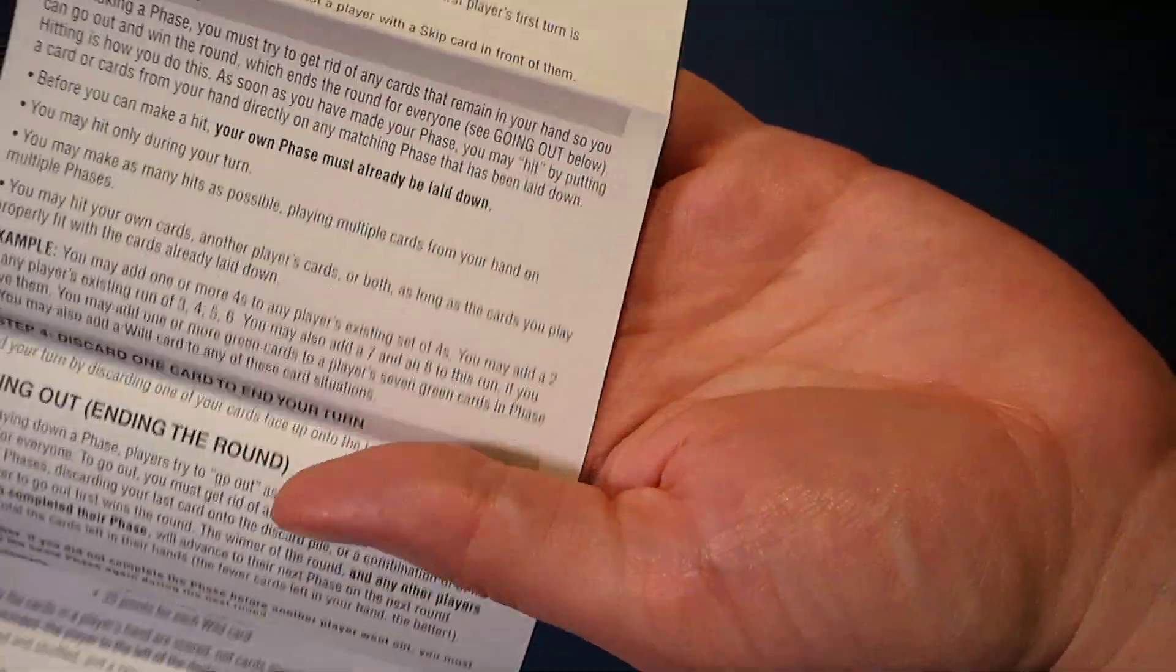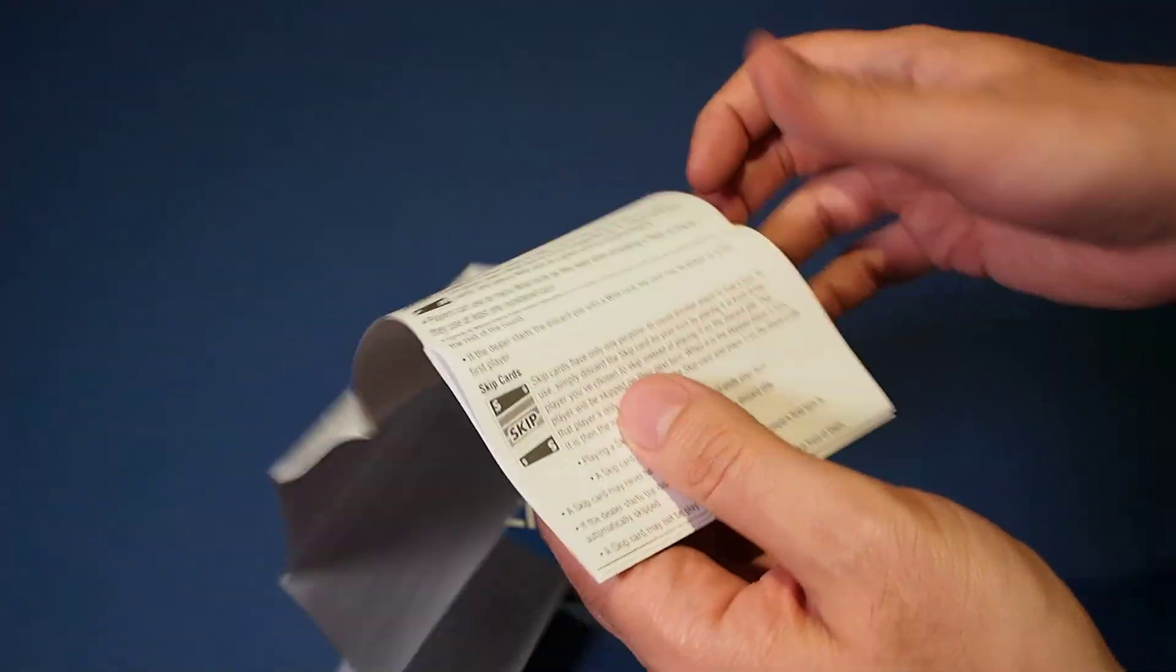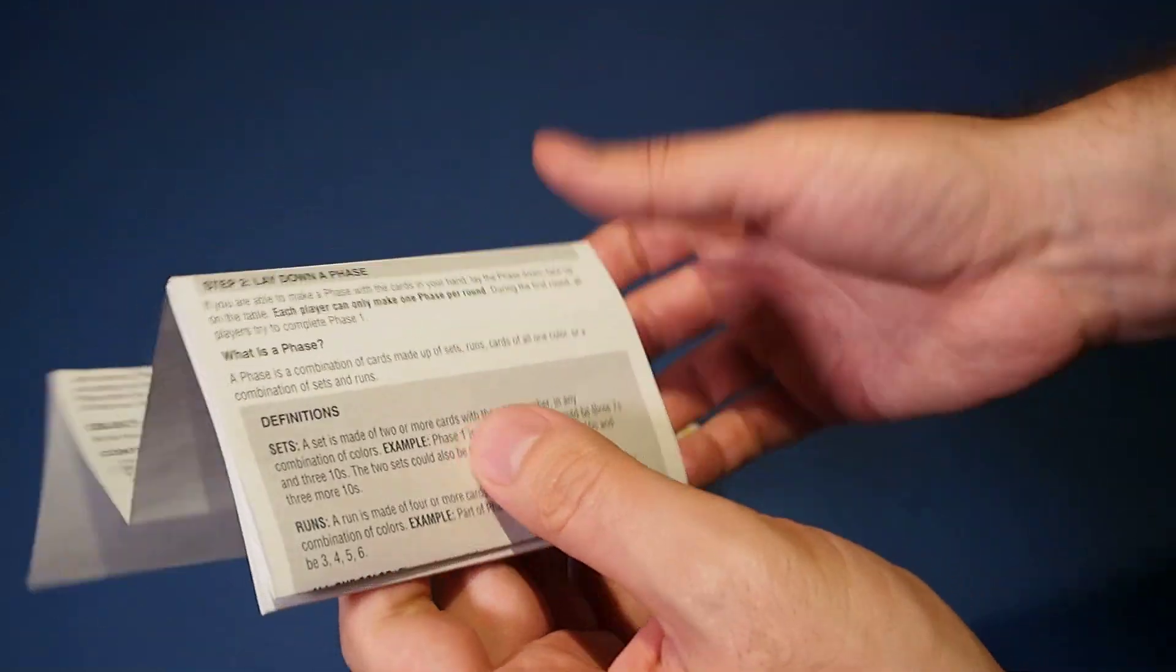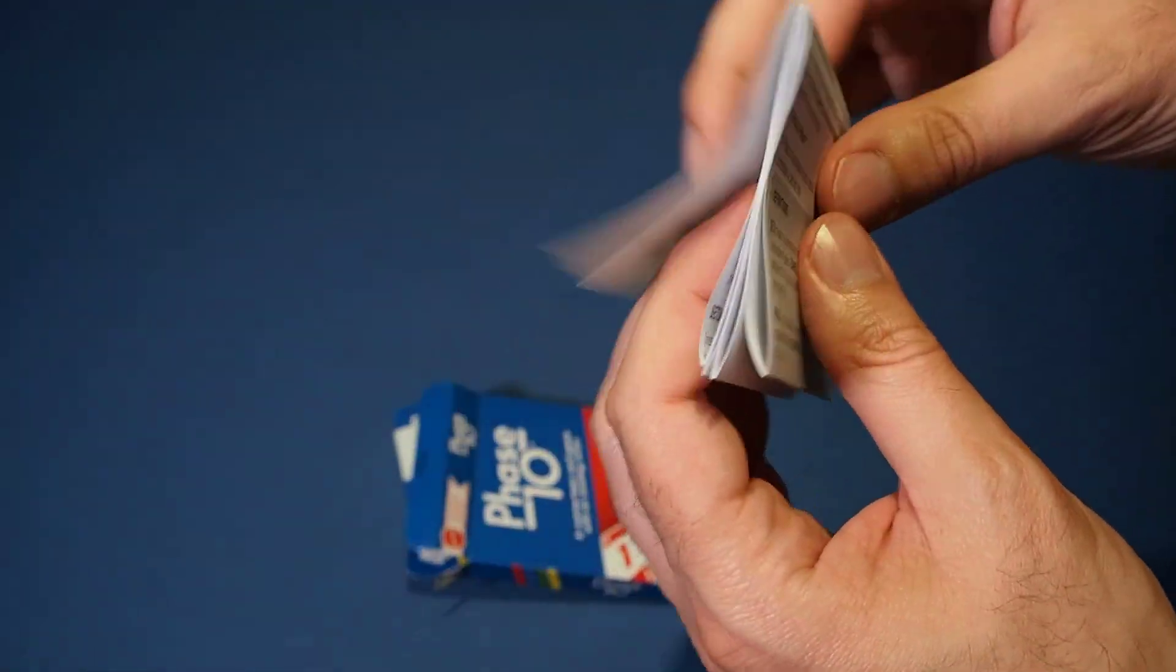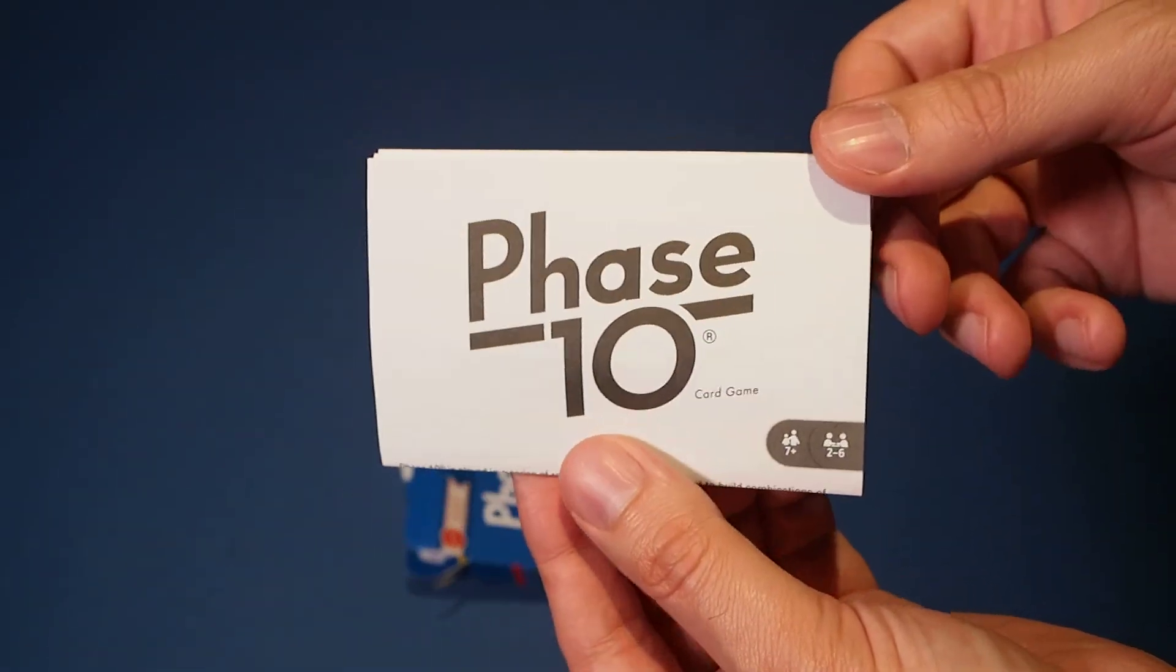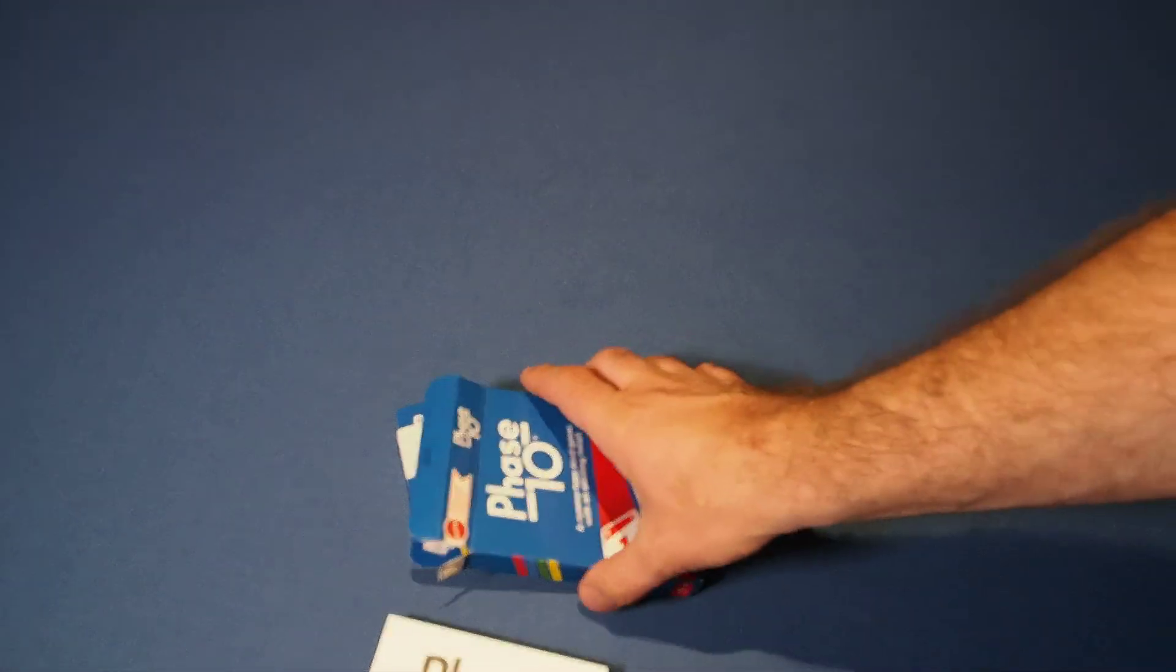Here are your instructions. Printed on like a CVS receipt. I like to get instructions laminated, but when they do them like this, kind of hard to do that with. But at least it folds up nicely and fits in the box.